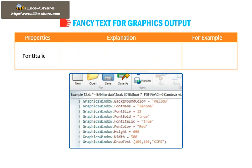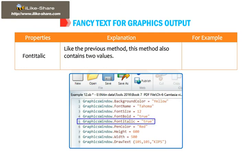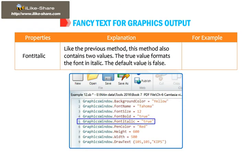Font Italic: like the previous method, this method also contains two values. The true value formats the font in italic. The default value is false. Example: GraphicsWindow.FontItalic = "True".